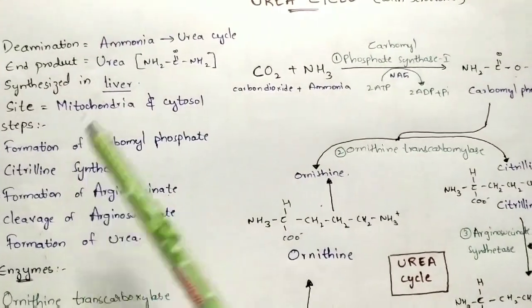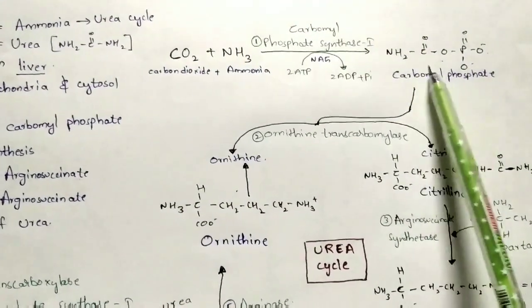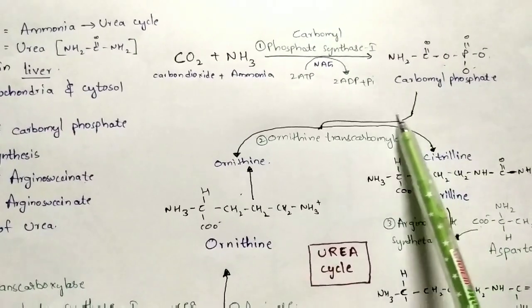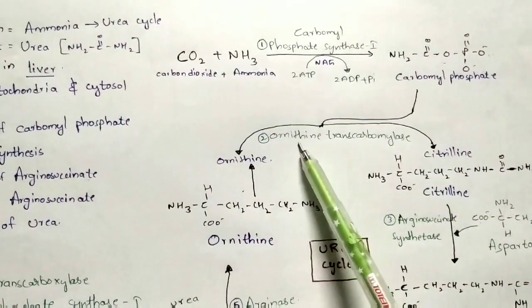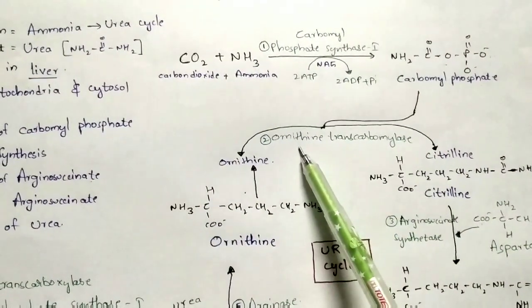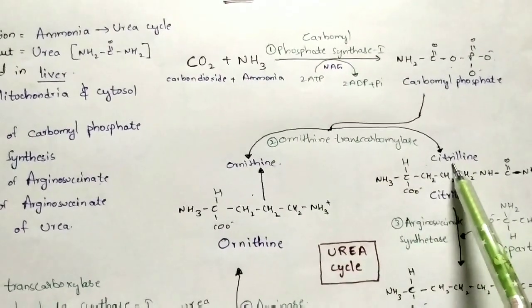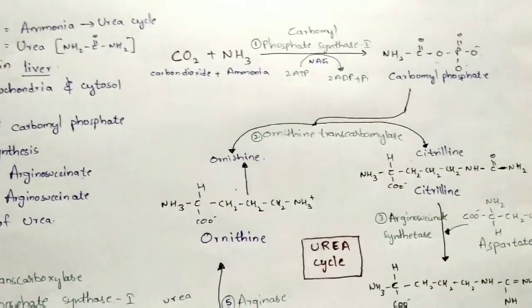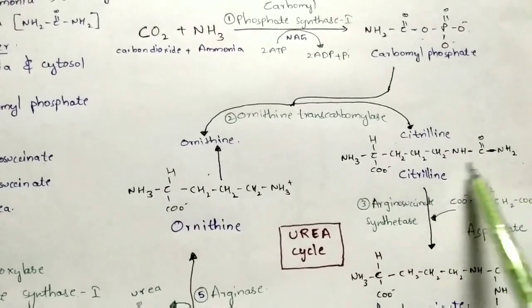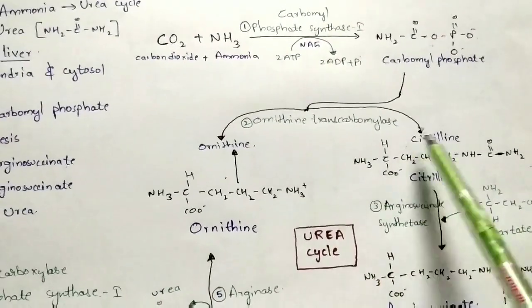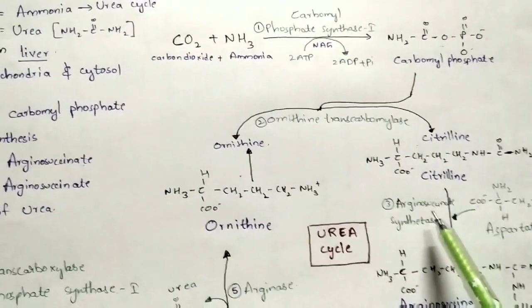Coming to the second step — citrulline synthesis. Carbamyl phosphate undergoes a reaction utilizing the enzyme ornithine transcarbamoylase to form citrulline. This is the molecular structure of citrulline.